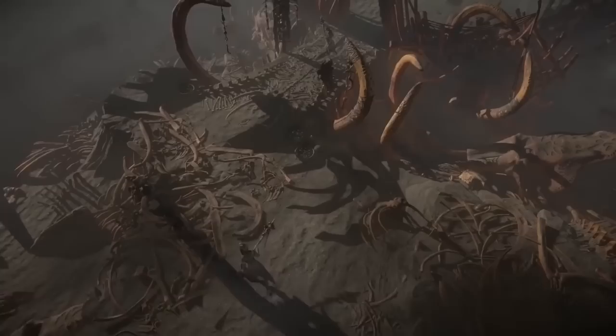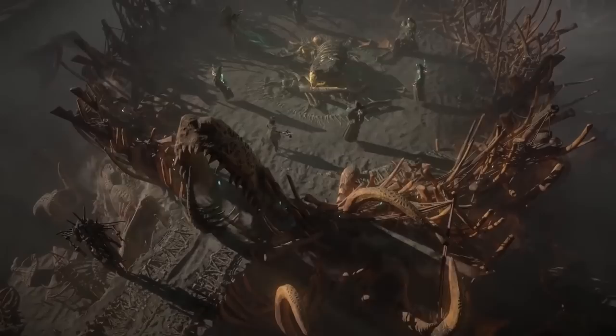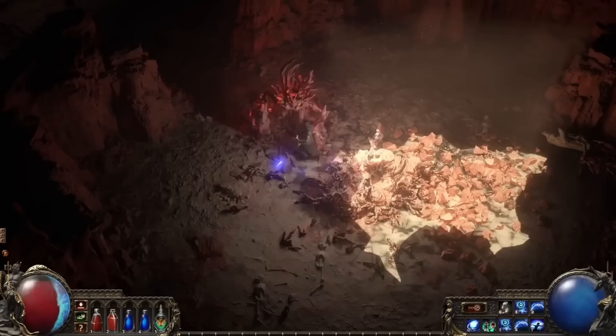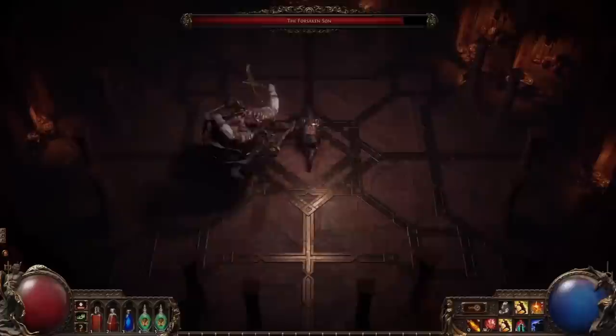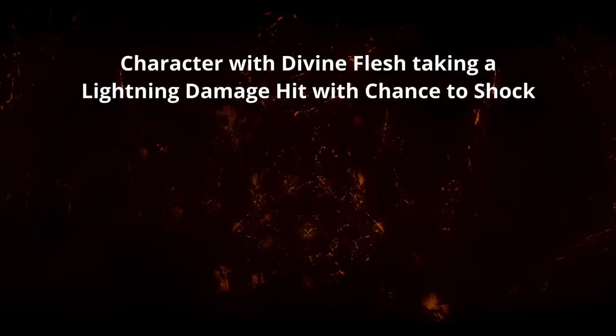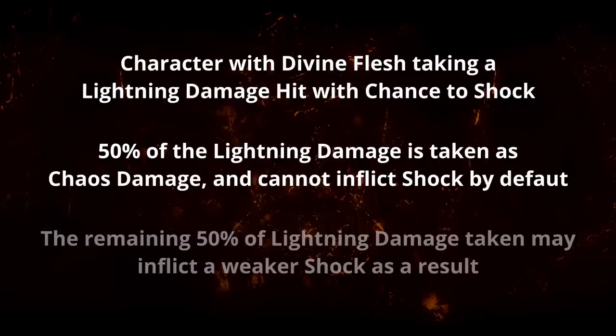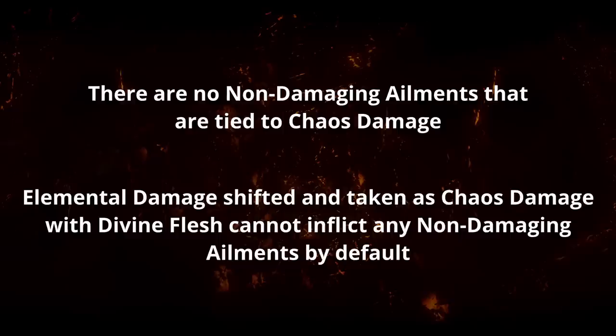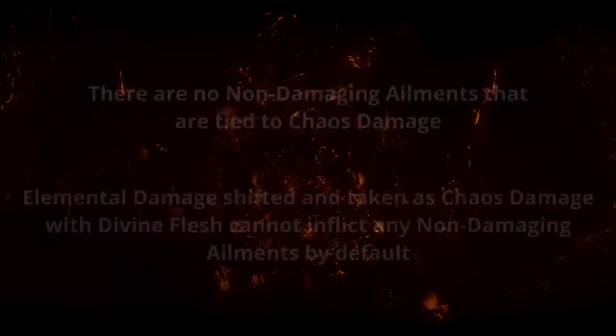Divine Flesh doesn't only improve effective resistance against elemental damage — shifting damage into another type changes the inherent properties of the damage. Non-damaging ailments such as shock, chill, or scorch are based on damage taken. Because Divine Flesh shifts elemental damage you take into chaos damage, part of the shifted damage can no longer apply non-damaging ailments by default. For example, if you take a hit of lightning damage with a chance to shock while using Divine Flesh, half the damage is taken as chaos and can no longer inflict shock, so the resulting shock from the remaining lightning portion may be lower.